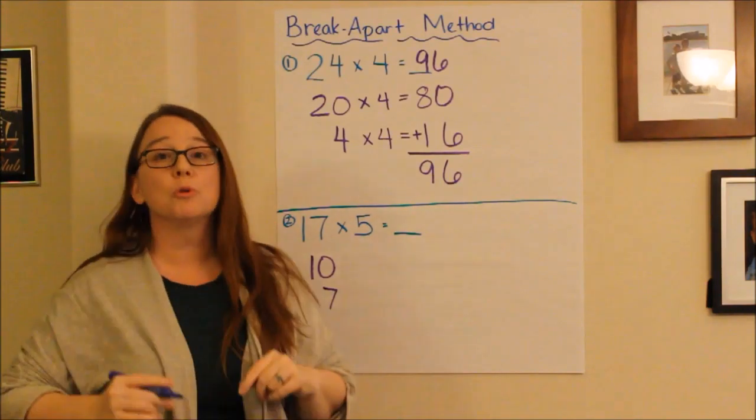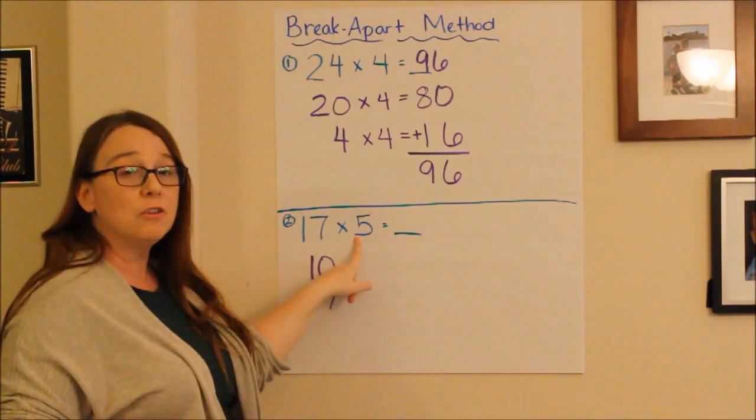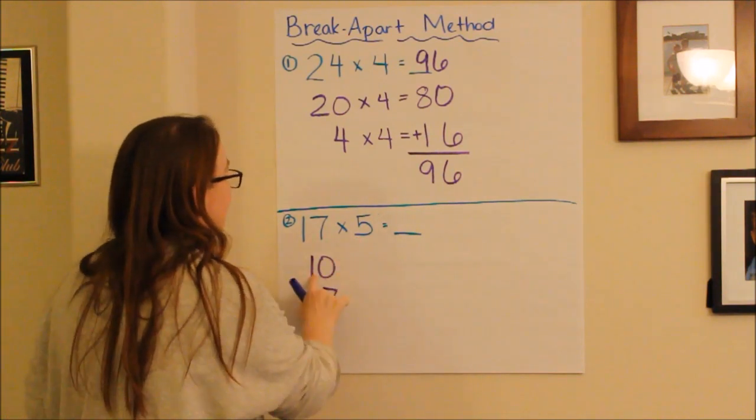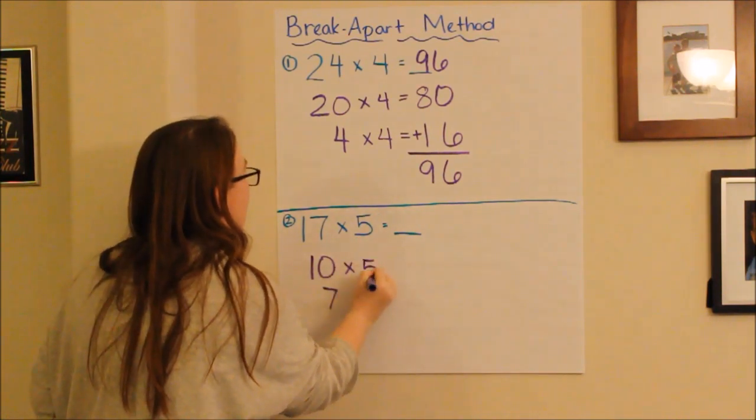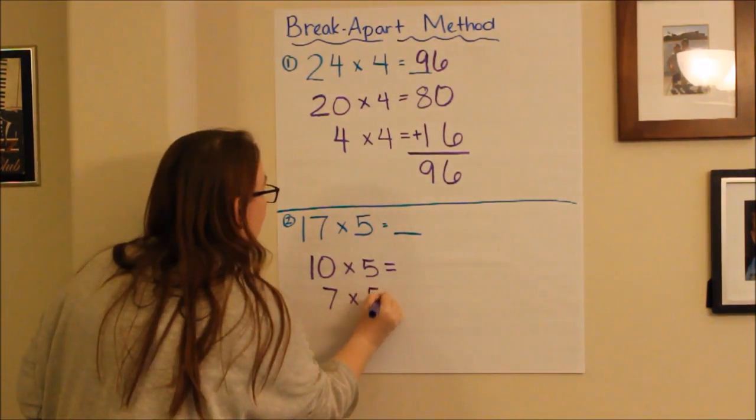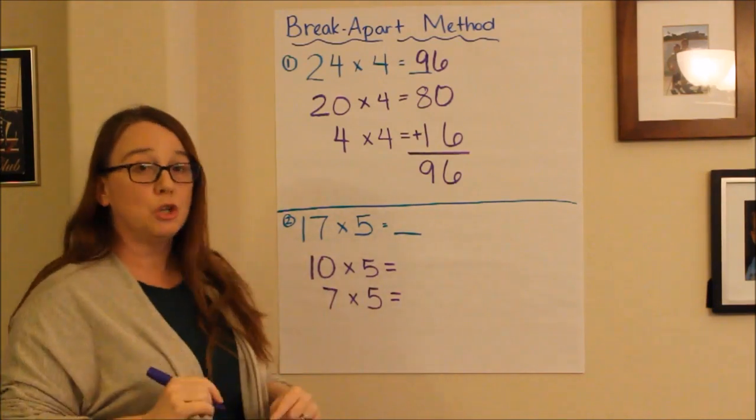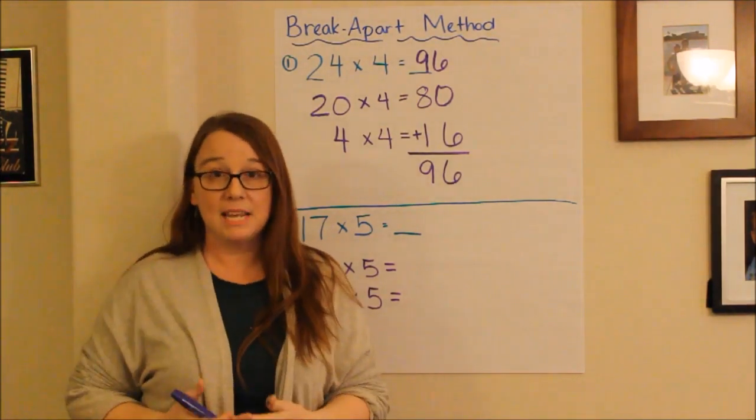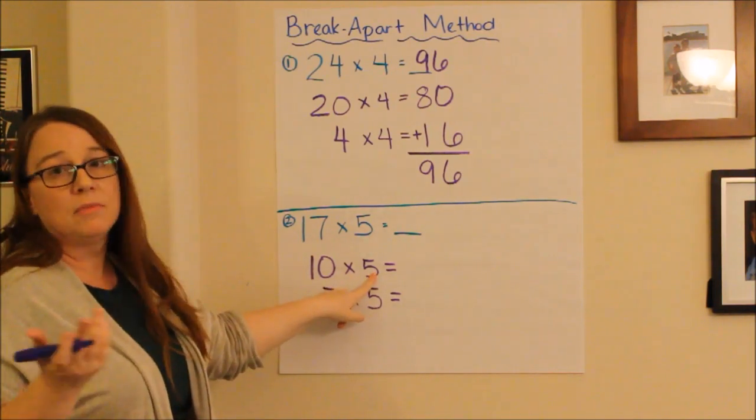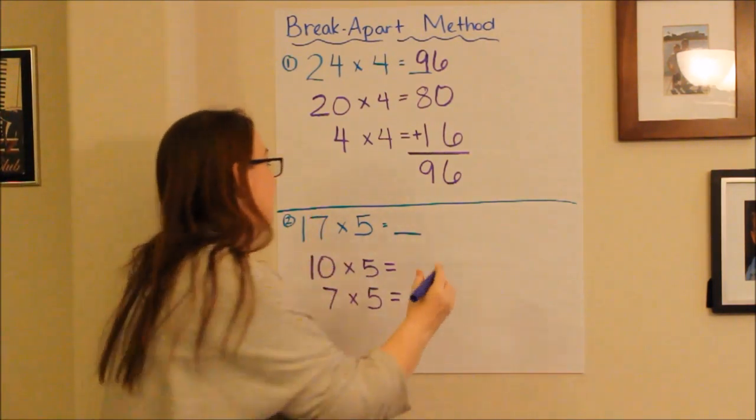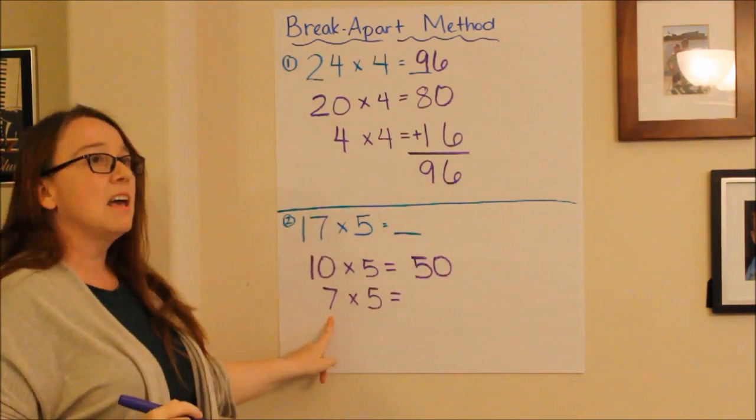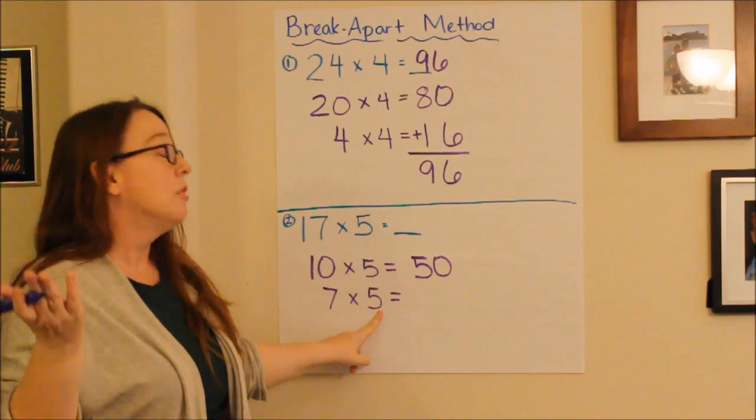I'm going to multiply each part by my other digit, which is 5. So, my first equation would be 10 times 5. My second equation would be 7 times 5. So, let's solve those two equations, and then we'll add them together to get our final answer. 10 times 5 is 50. Good job. And, 7 times 5 would be 35.